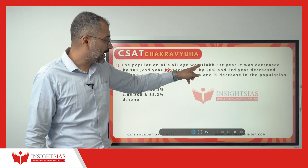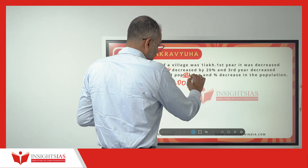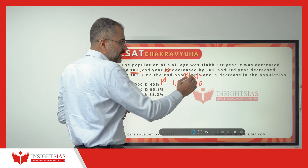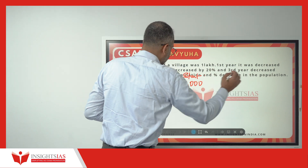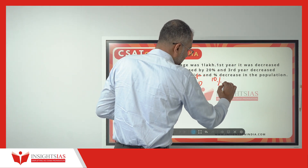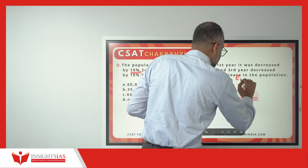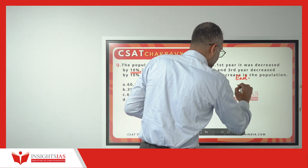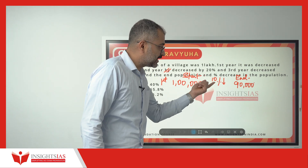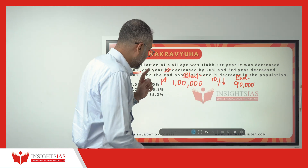The question says 1 lakh is the starting population at the start of the first year. First year it was decreased by 10%. If you decrease 1 lakh by 10%, that is 10,000. So the end population in the same year becomes 90,000.